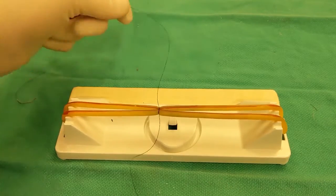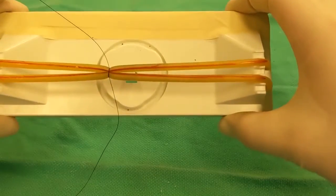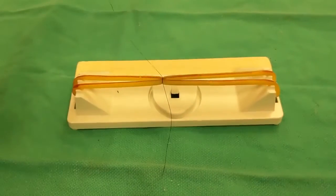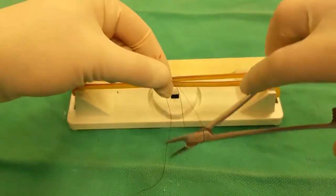And you can see here, it's maintained tension much better than before. Only the first throw is a double wrap, and all subsequent throws are single wraps.